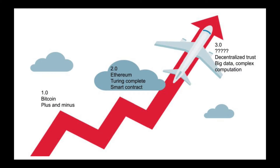Use cases such as big data and AI require highly complex computation. Contracts that require complex computation can barely run on Blockchain 2.0 platforms. Currently, they cannot be handled at scale. We need Blockchain 3.0 technologies. TEA is one of the solutions.